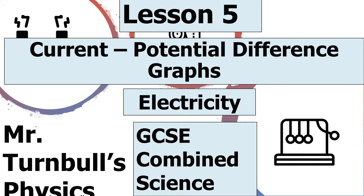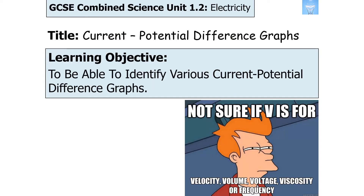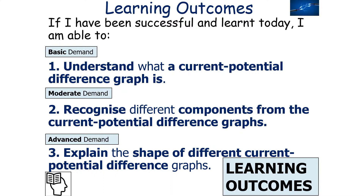Hello and welcome to today's lesson on current potential difference graphs, which is part of the electricity topic in GCSE Combined Science Physics. In today's lesson we're going to identify various current potential difference graphs for different components. By the end of the lesson, we should be able to understand what a current potential difference graph is, recognise different components from these graphs, and explain the shape of different current potential difference graphs.